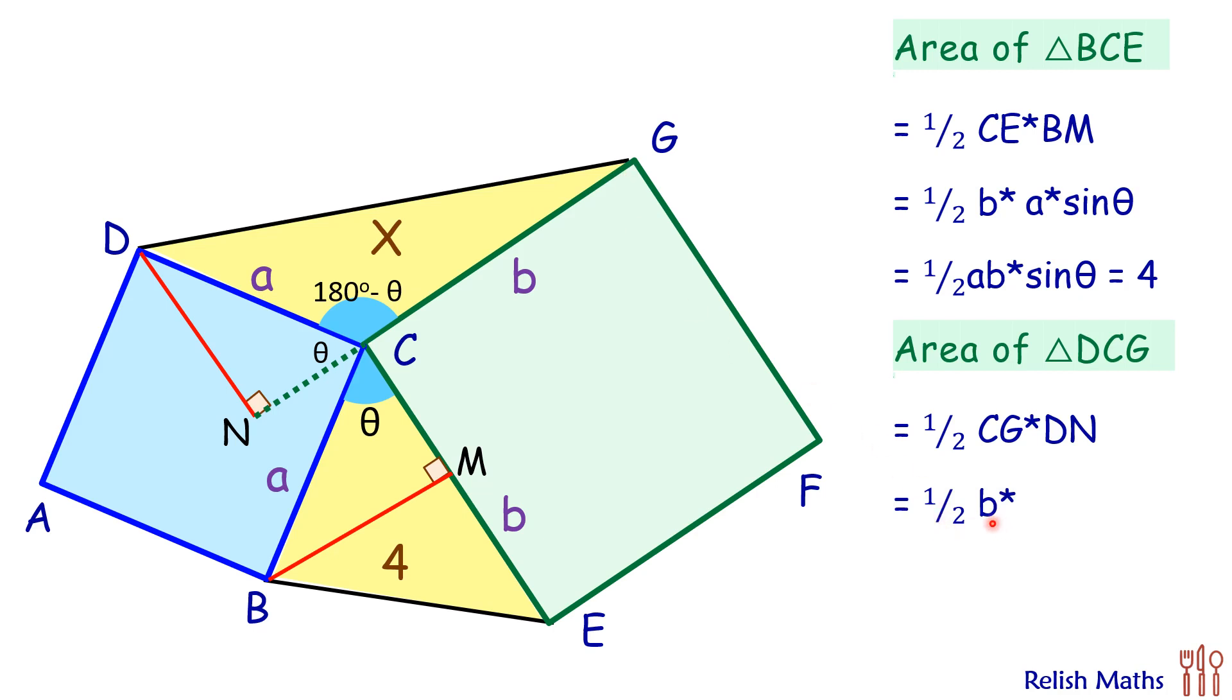here is θ degrees because this is 180° - θ, so the remaining is θ. DN will be a times sin θ. Putting this value, DN is a sin θ, and we know that half of a